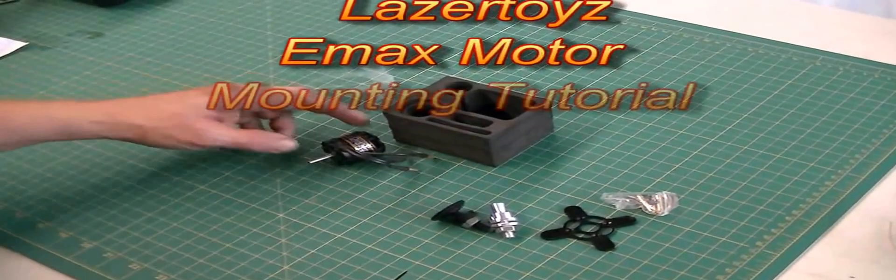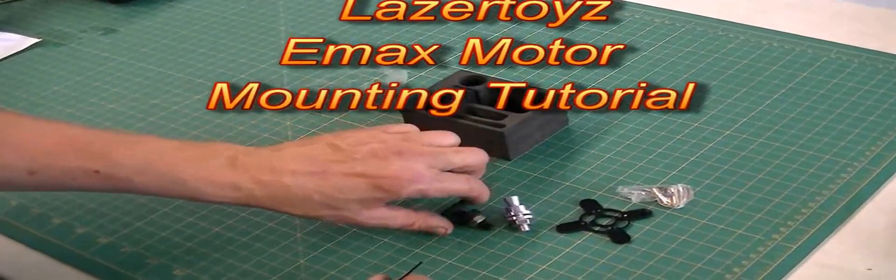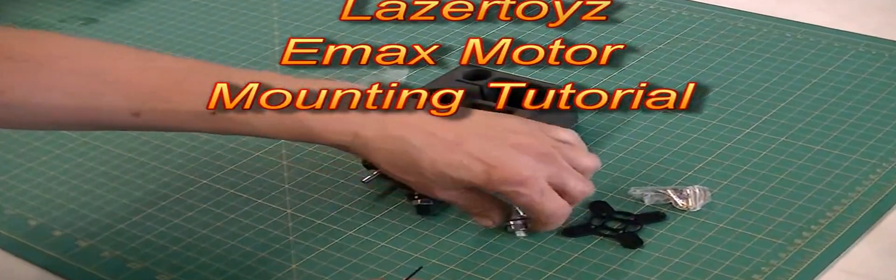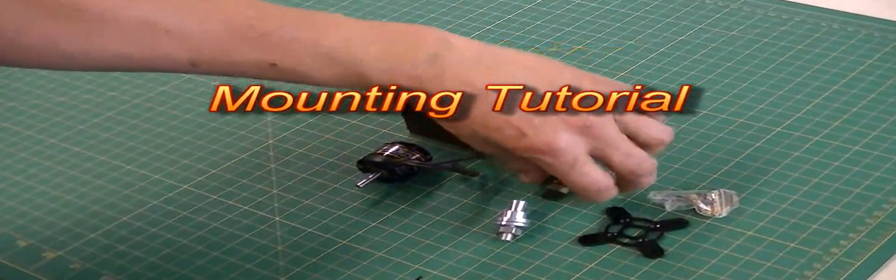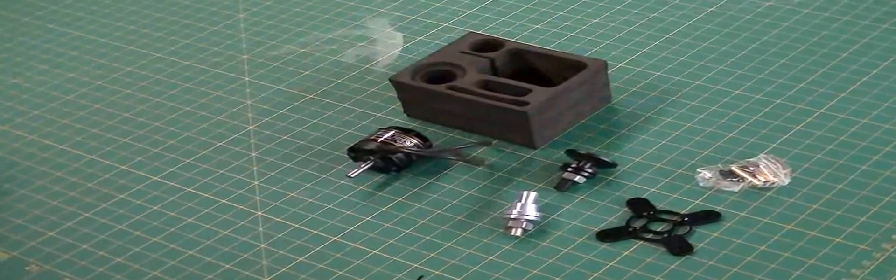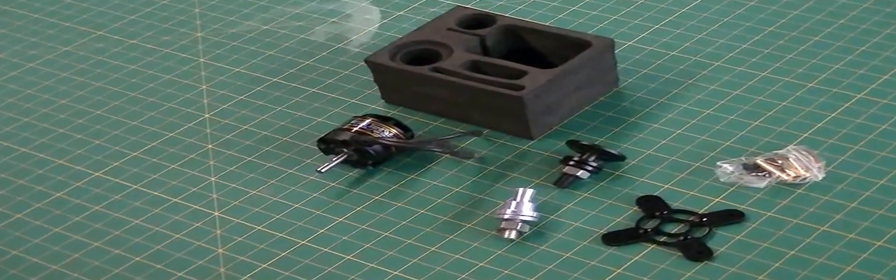All right, this is a standard Emax motor. These are all the components you get with it, and this is how you can assemble it for different configurations.